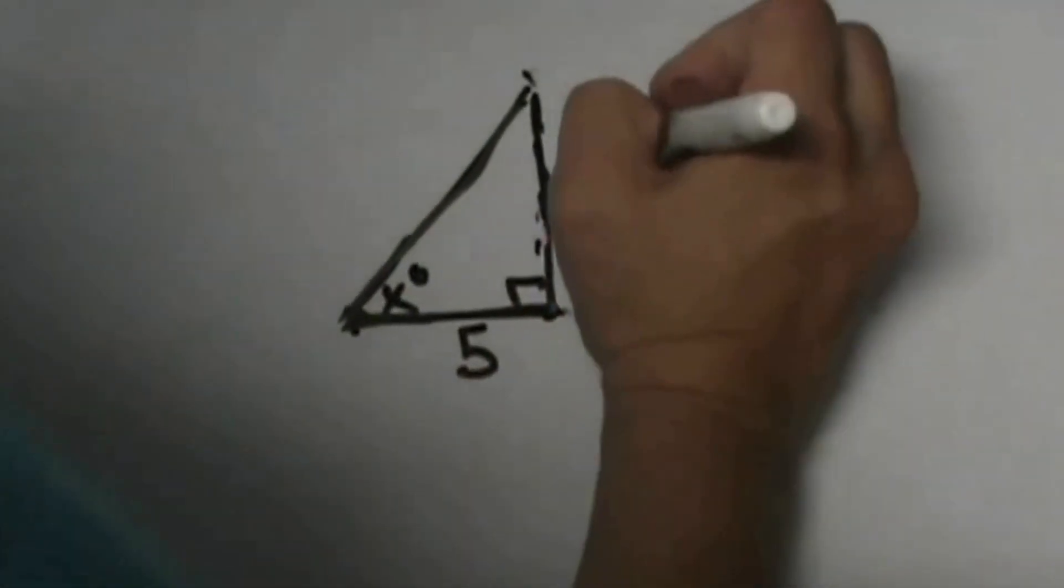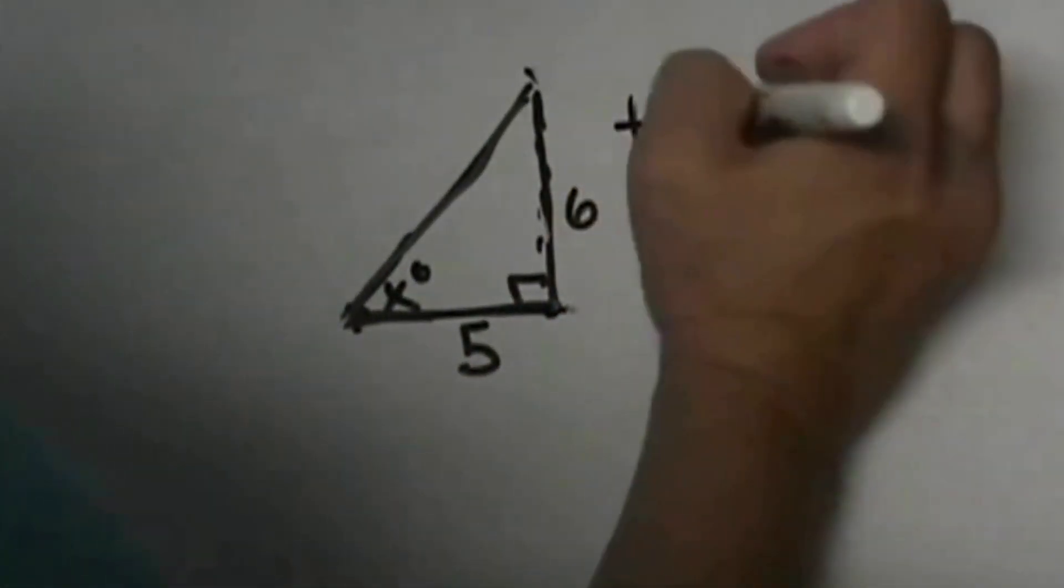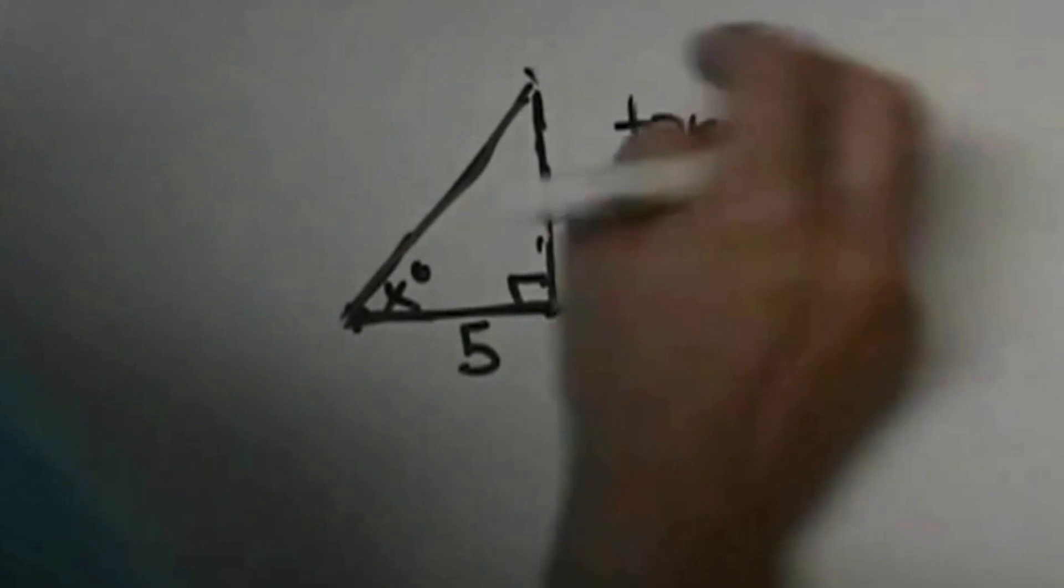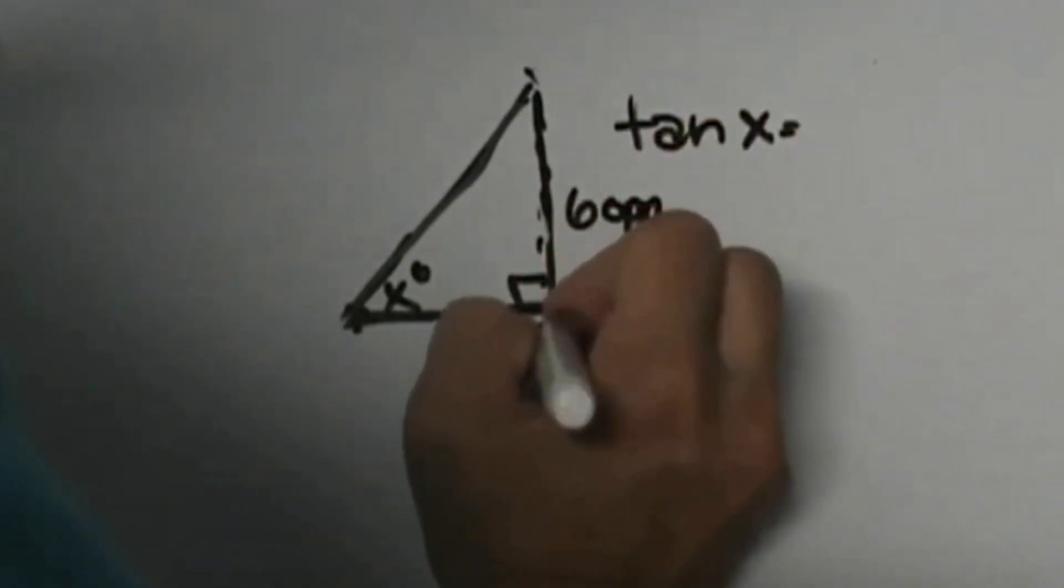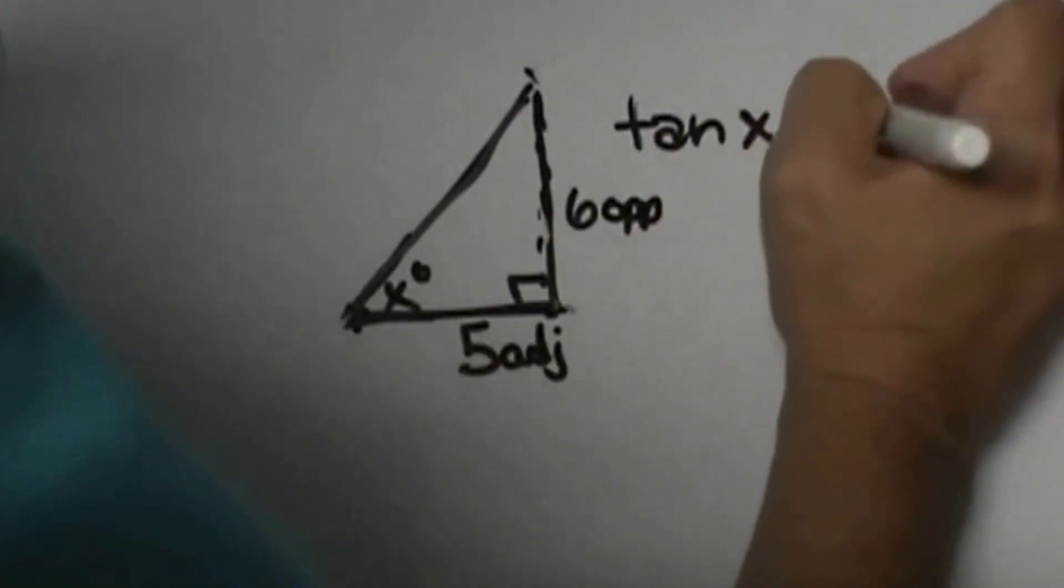So this one is a tan problem. Tangent of x is equal to opposite over adjacent, so 6 over 5.